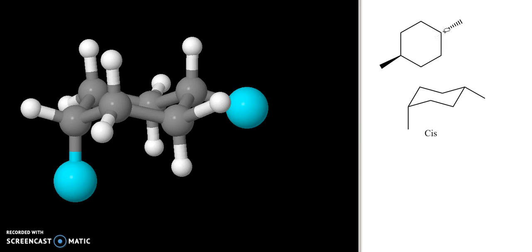If we want to draw the correct structure, we actually have to change this so that both of my methyl groups are equatorial, or I could draw them both axial. But what you'll see is this is pointing down, this is pointing up, this molecule is actually trans.